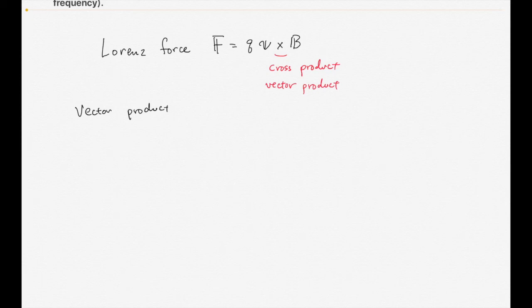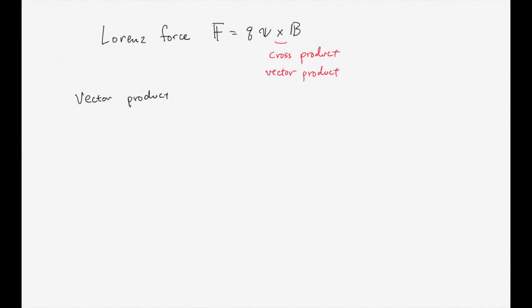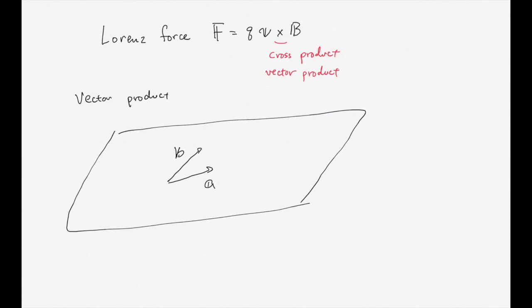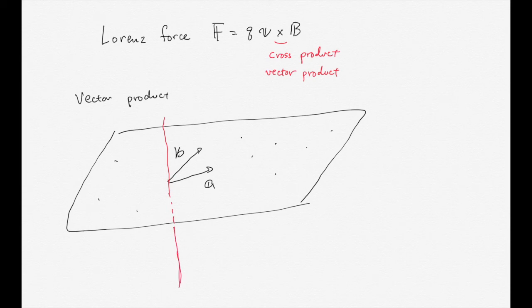The vector product is a product of two vectors. If you consider two vectors A and B, these two vectors determine a plane. Any point on the plane can be expressed as a sum of vectors A and B. The vector product is defined as a vector perpendicular to these planes, and also perpendicular to the B vector.